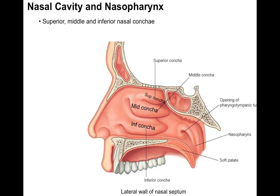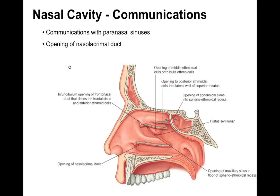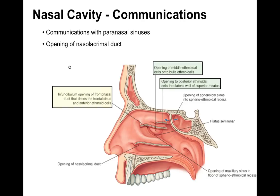In this sagittal section we see the superior, middle, and inferior nasal concha. If we cut those nasal concha, we can show that in the meati — superior meatus, middle meatus, and inferior meatus — there are communications for the paranasal sinuses and the opening of the nasal lacrimal duct. The frontal nasal duct drains the frontal sinus and ethmoid cells into the middle meatus, along with middle and posterior ethmoid air cells. The sphenoid sinus and maxillary sinus also drain into the meati. The nasal lacrimal duct empties into the nasal cavity in the inferior meatus.